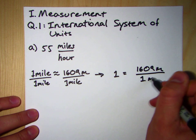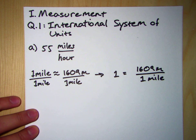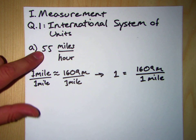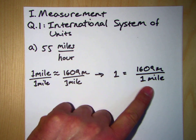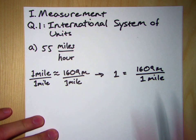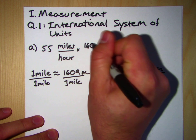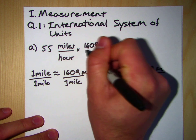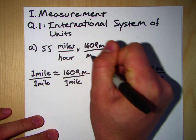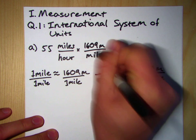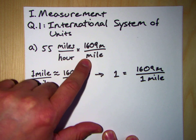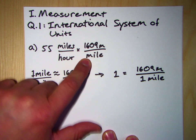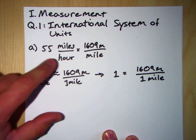what we get is that one is equal to 1,609 meters per mile, or divided by one mile. And so what we're going to do is we're going to take this quantity, 55 miles per hour, and we're going to multiply it by one. But not just any one, we're going to multiply it by this one right here. So this is times 1,609 meters in one mile, so per mile. And what we're going to see already is that these miles and these miles are going to cancel out. And we'll get there in a sec, but we have to convert one more thing.